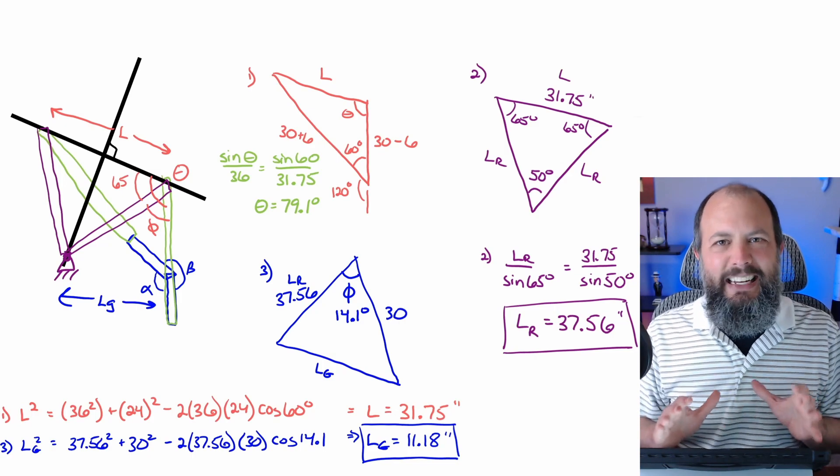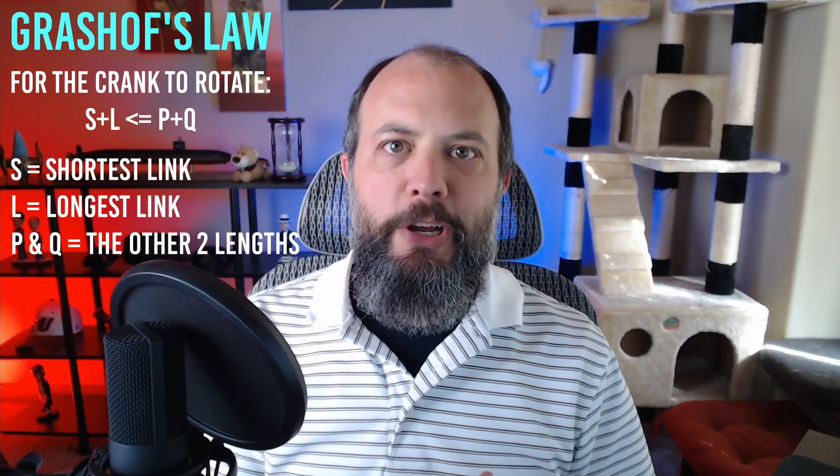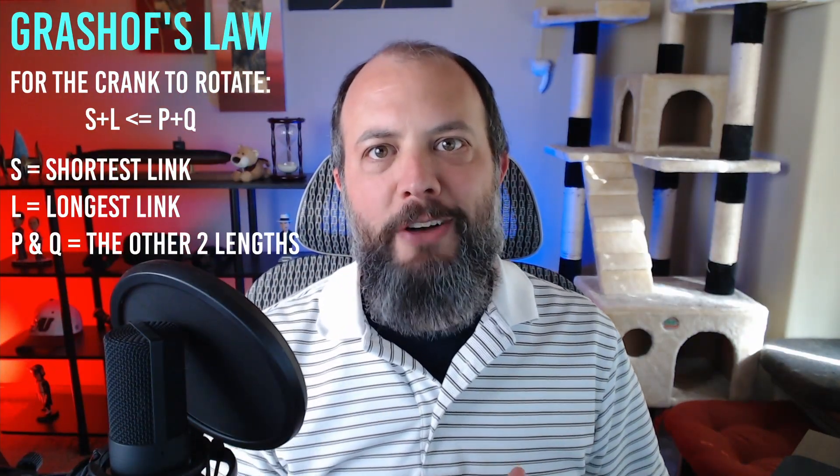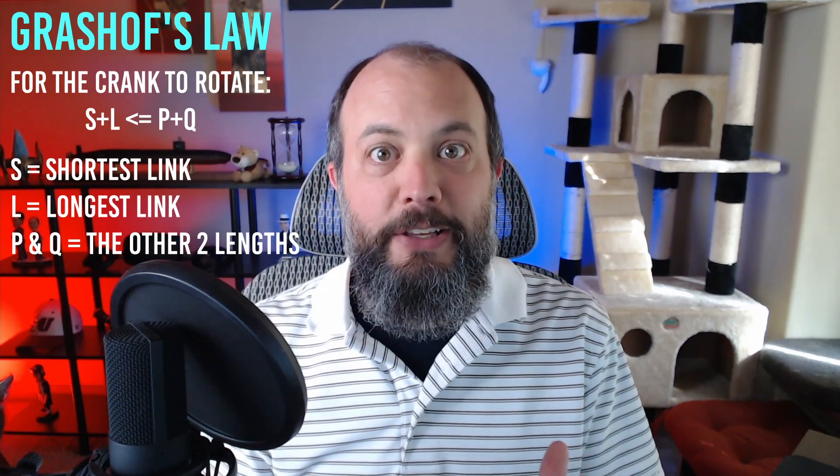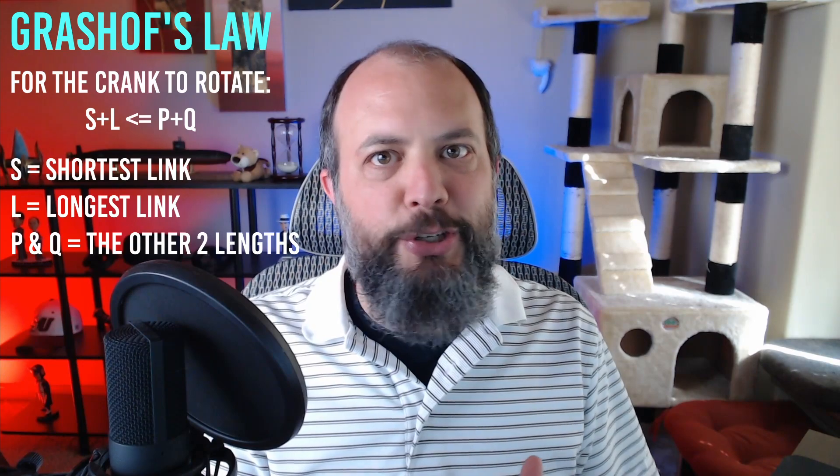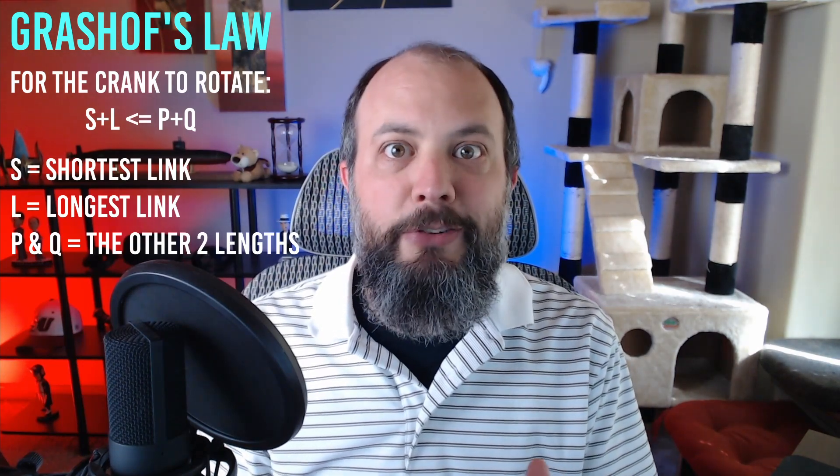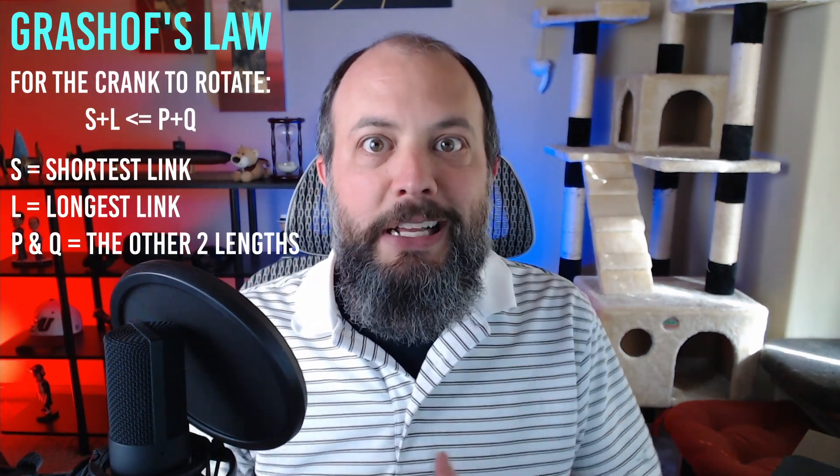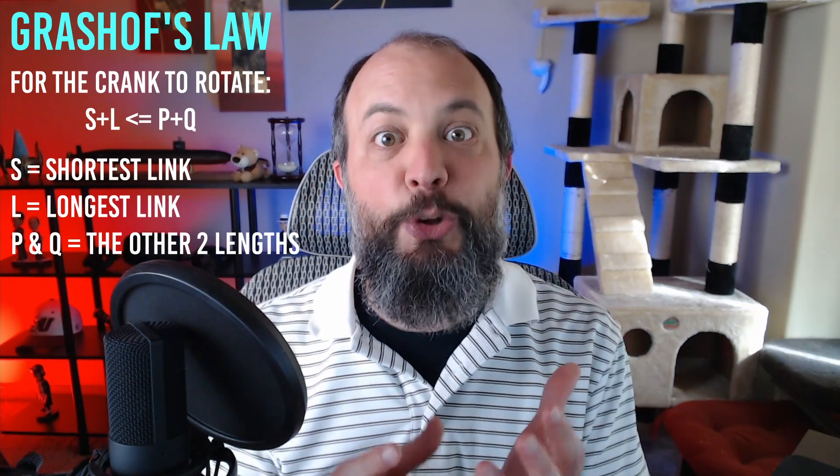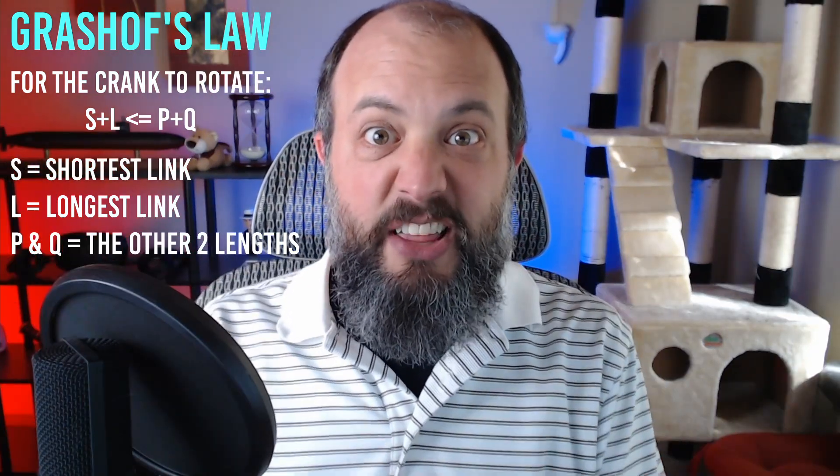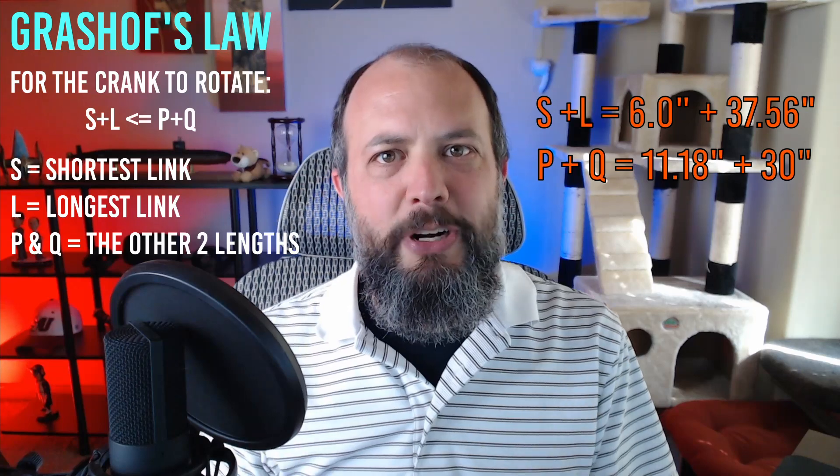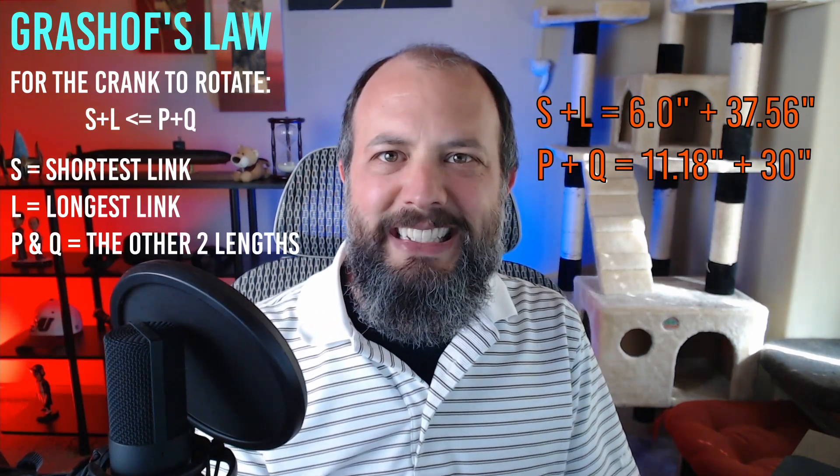It's essential when creating a four bar linkage to check the Grashof condition at the end to verify that your mechanism will actually rotate. Just because these graphical solutions to quick return mechanisms or any other type of design gives you an answer, doesn't mean the answer will actually physically work. That's super frustrating because I thought we were done. So looking at my four lengths, the shortest is six inches, the longest is 37, so that's 43 inches on one side. My two middle lengths are 30 and 11, that's 41 inches on the other side.